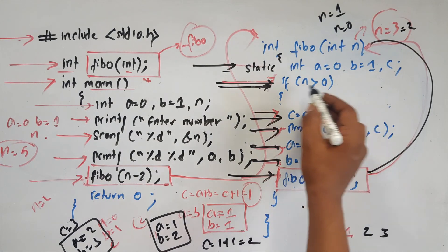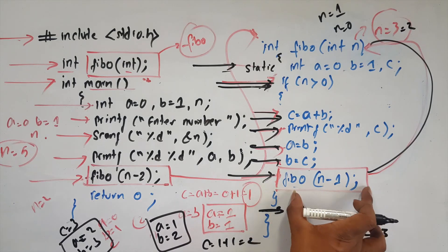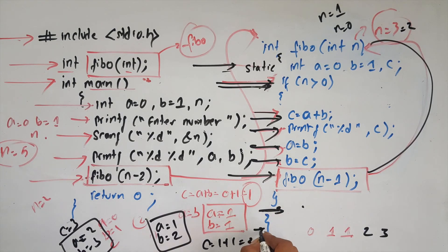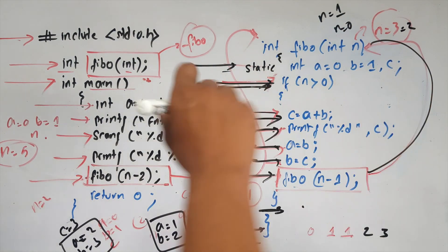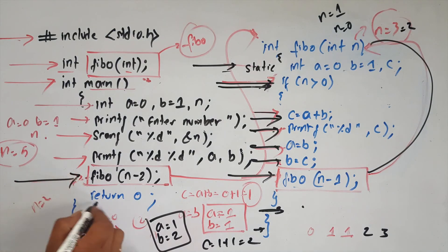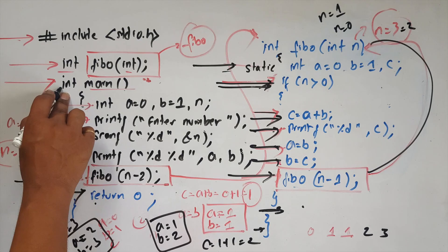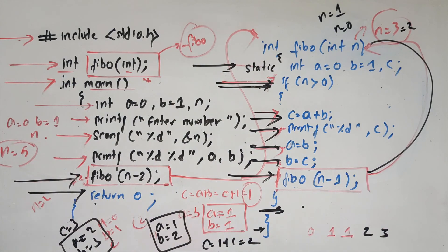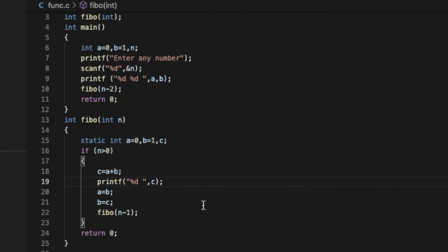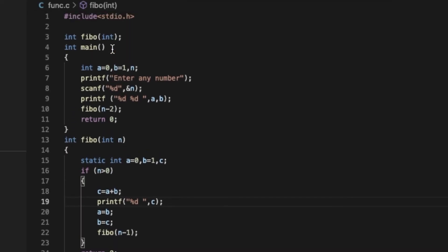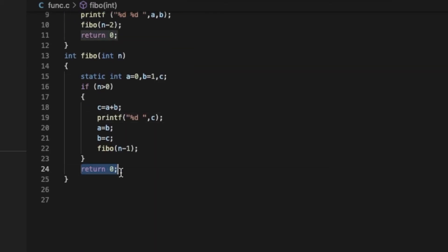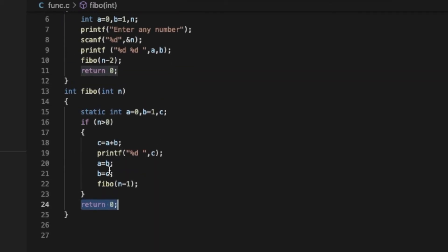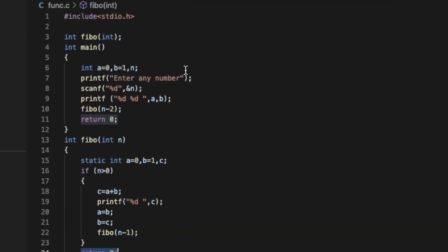There is a function called here. There is a sub-module. The function definition is called at this line. Then the program reaches return 0. I will use this recursive function as well as return 0. So I will use this function in the way I will run it.